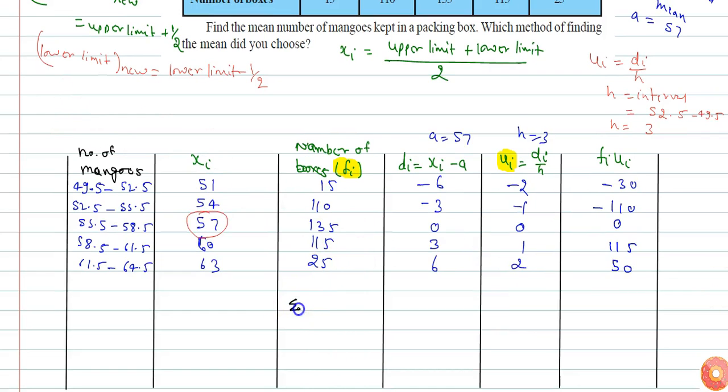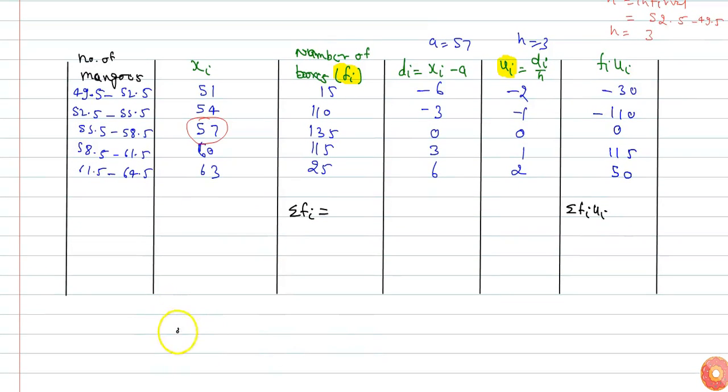So now we have summation of fi and summation of fi ui. I can calculate summation of fi and summation of fi ui. And the mean is given by a plus summation fi ui by summation fi into h, where a is the assumed mean and h is the class size which is 3 in this question.